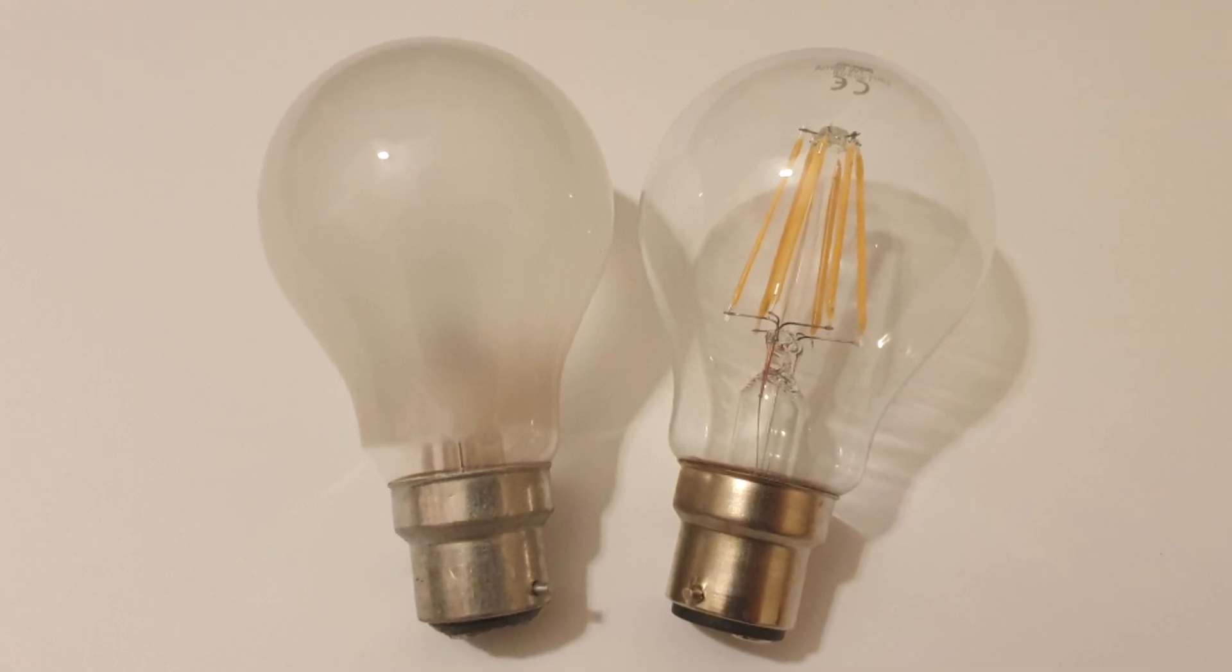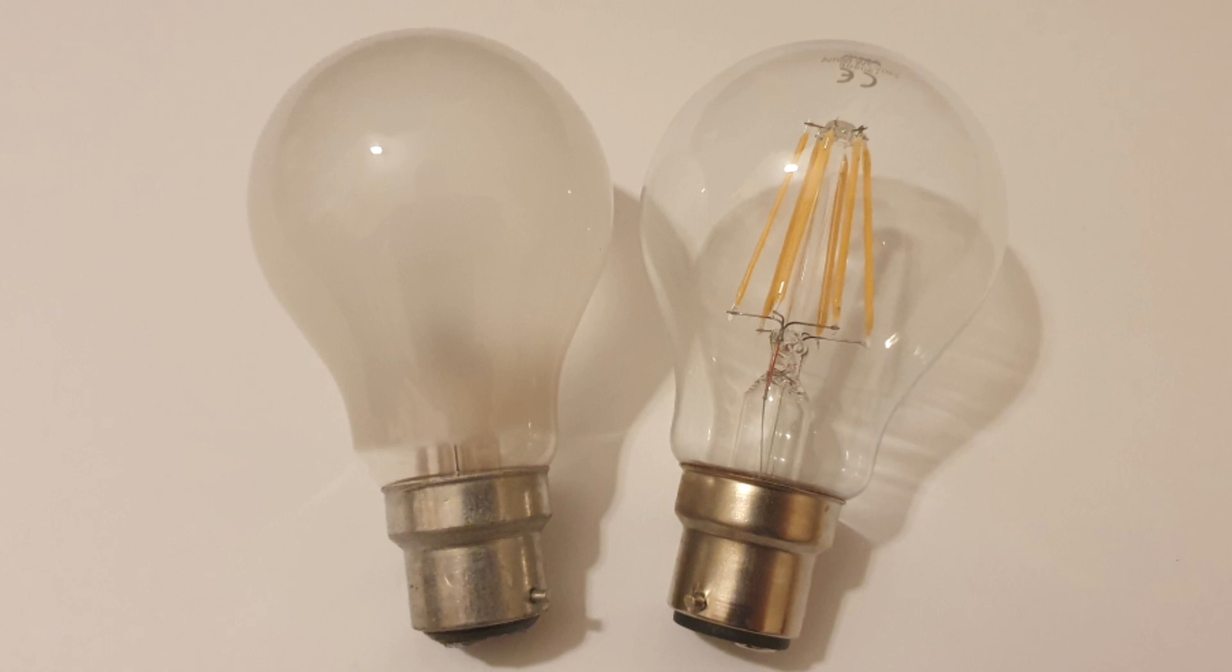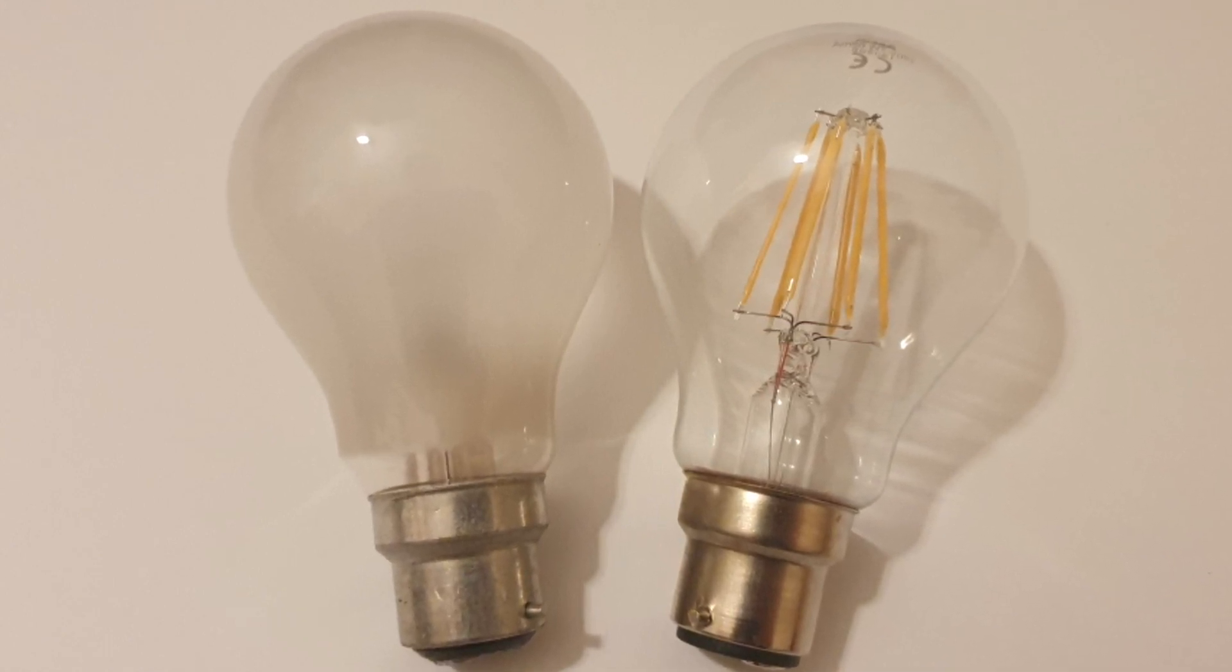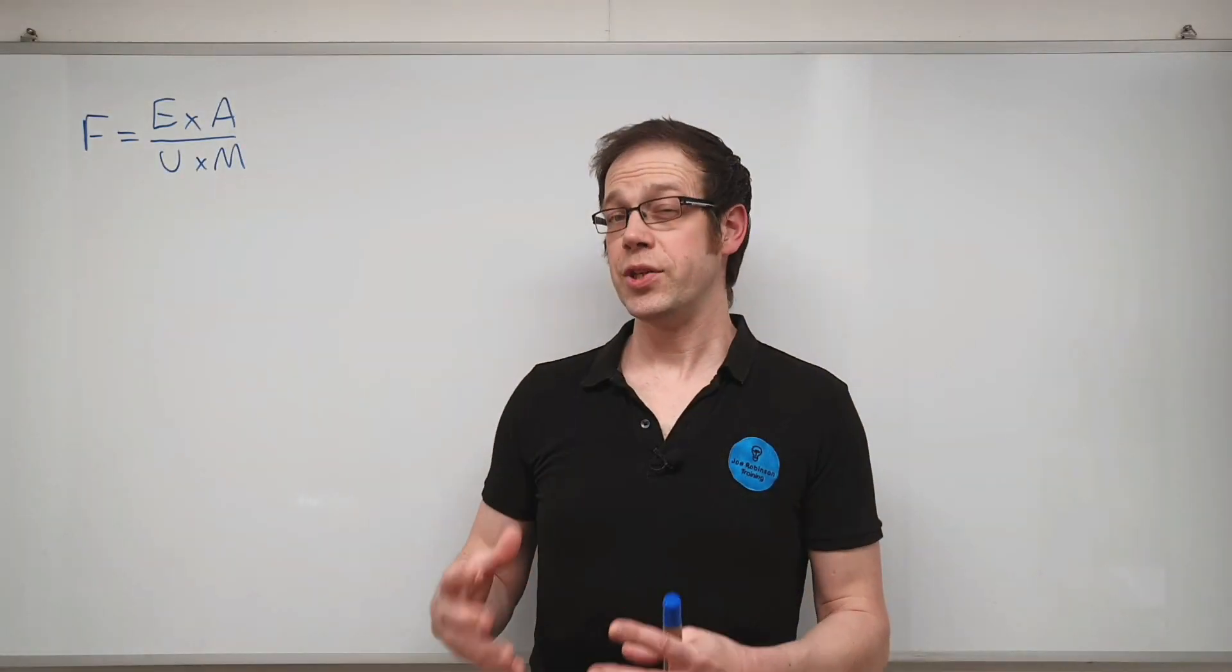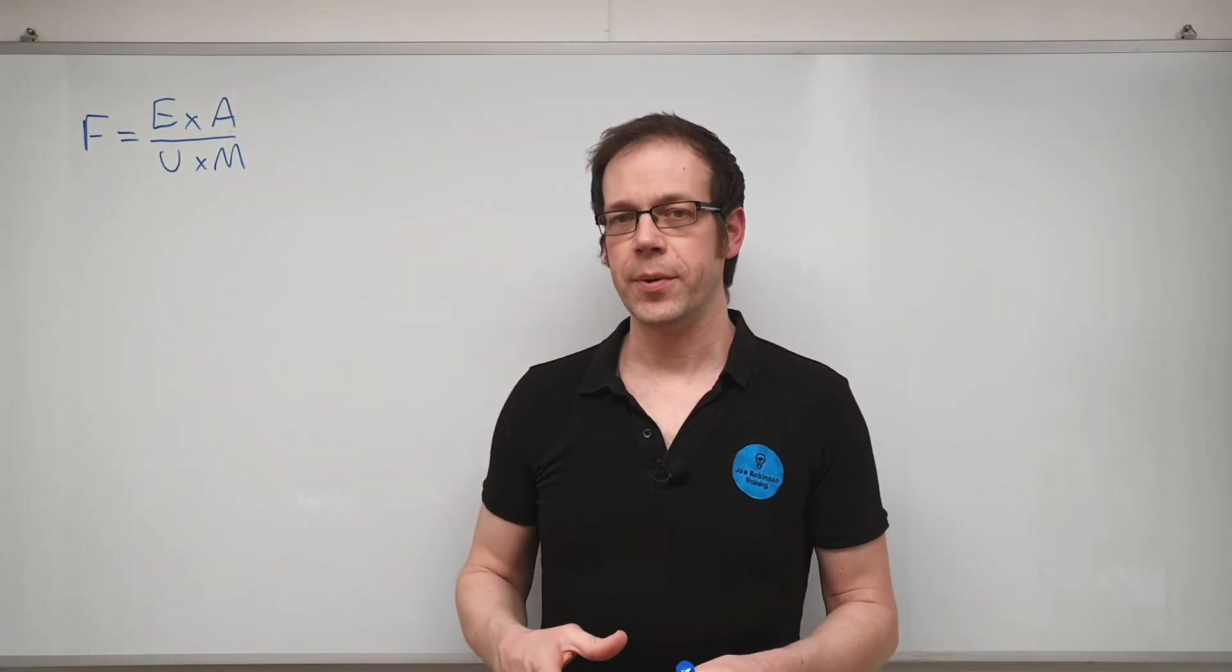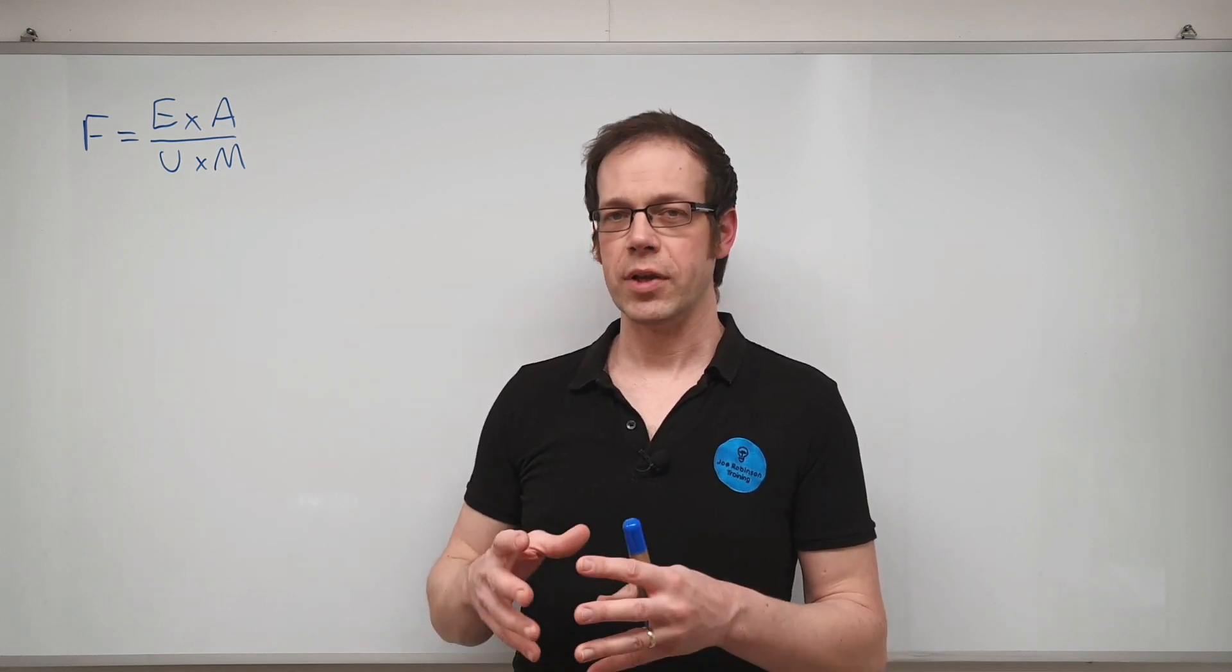However if you think about a traditional filament lamp or a replacement LED lamp it doesn't just emit light in one direction it emits light all around it and luminous flux is a better way of measuring the amount of light that a fitting gives off. So there is a relationship between candelas and lumens but it's a little bit complicated for the purposes of this video and we're not going to go into it in a lot of depth here.